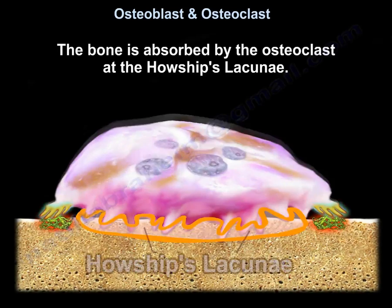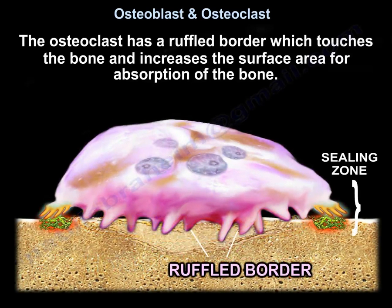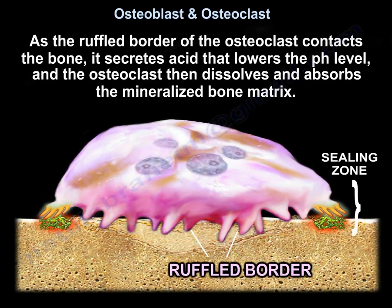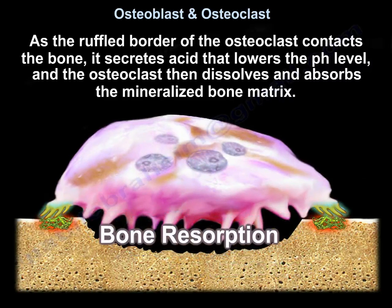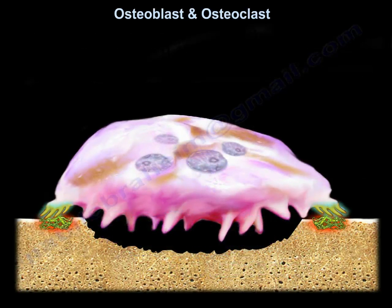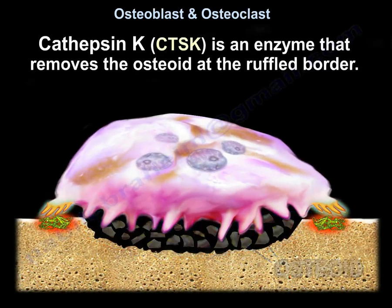The bone is absorbed at the Osteoclast. The Osteoclast has a ruffled border which touches the bone and increases the surface area for absorption. As the ruffled border contacts the bone, it secretes acid that lowers the pH level, and the Osteoclast then dissolves and absorbs the mineralized bone matrix. Cathepsin-K is an enzyme that removes the osteoid at the ruffled border.